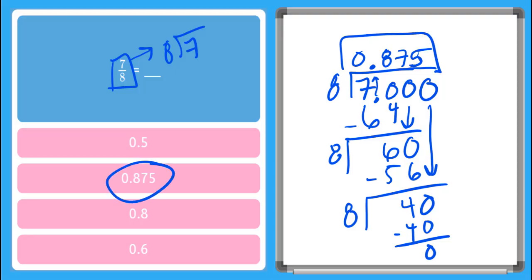And there it is. So great job learning how to convert fractions to decimals. Remember, the first thing we do is convert our fraction into a division problem, and then we solve by dividing with decimals. Great work. Practice what you've learned by doing the online games and quizzes. Have fun and remember to always be clever.